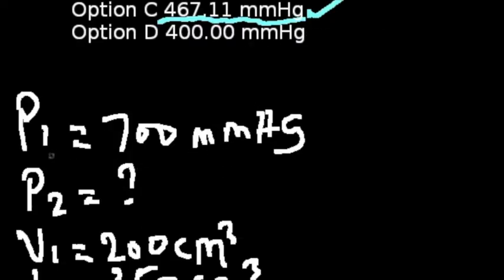First thing we are going to do is to take cognizance of the parameters that are given to us in the equation. We are given our first pressure to be 700 mmHg. We are not given the second pressure. That is what we are asked to determine. We are given our first volume to be 200, our second volume to be 350.